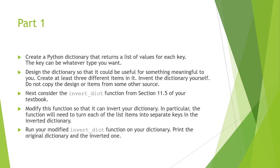The goal today is to create a Python dictionary that returns a list of values for each key. The key is going to be whatever type you want, so you'll be declaring the keys. The goal is to design the dictionary function so that it can be useful for something meaningful to you, with at least three different items in it.